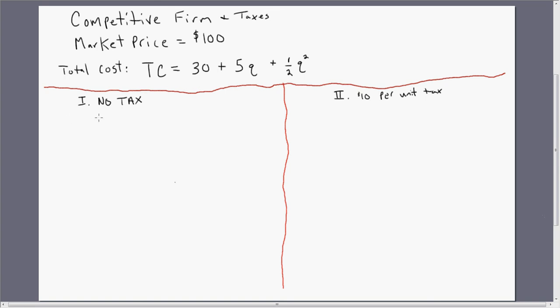Let's maximize profits. Competitive firms maximize profits where price equals marginal cost. We've got the left-hand side. The left-hand side is $100. Let's solve for marginal cost.